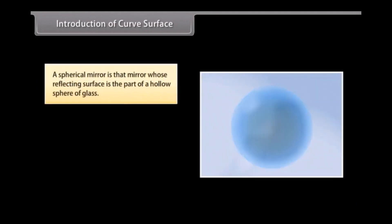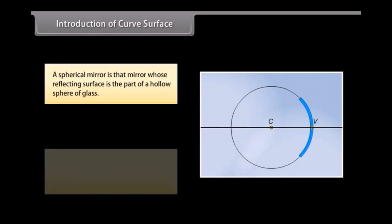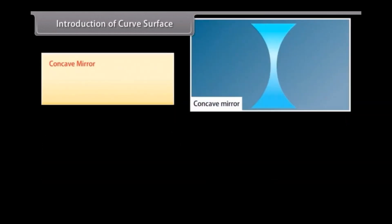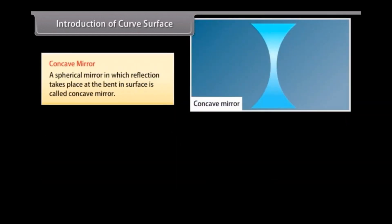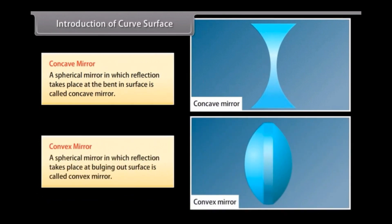A spherical mirror is a mirror whose reflecting surface is part of a hollow sphere of glass. Spherical mirrors are of two types: concave mirror and convex mirror. A concave mirror is one in which reflection takes place at the bent-in surface. A convex mirror is one in which reflection takes place at the bulging-out surface.